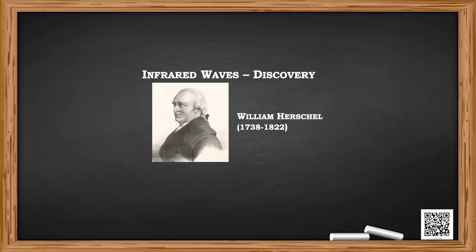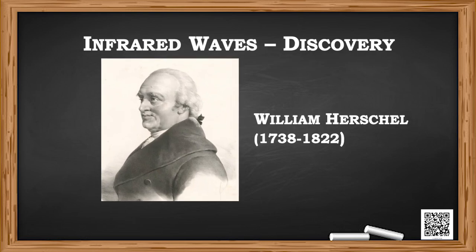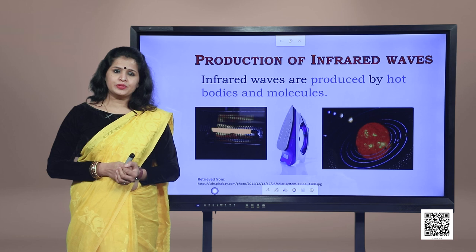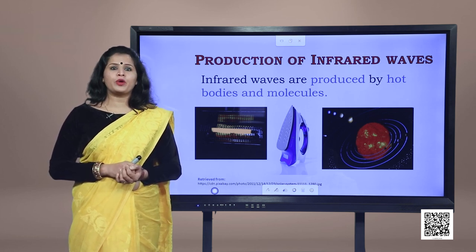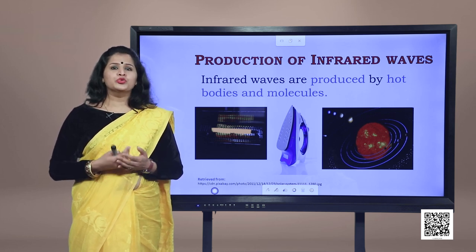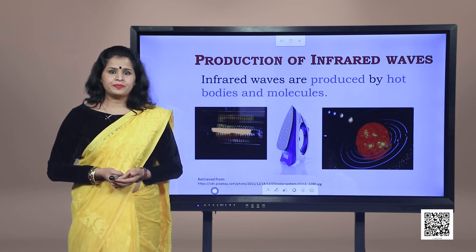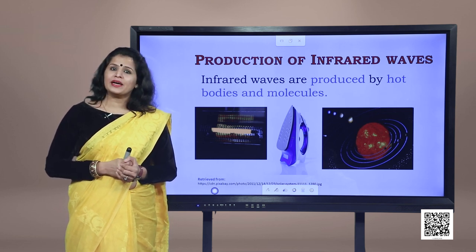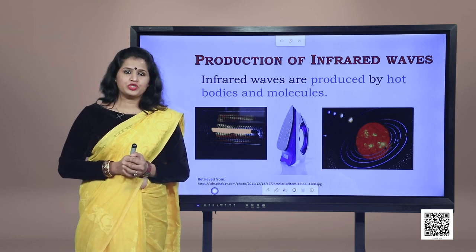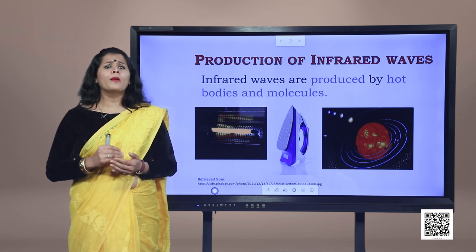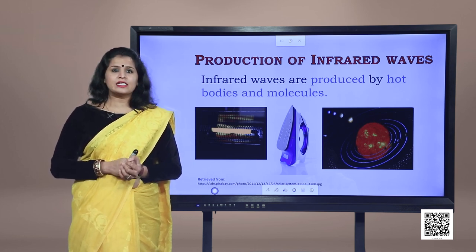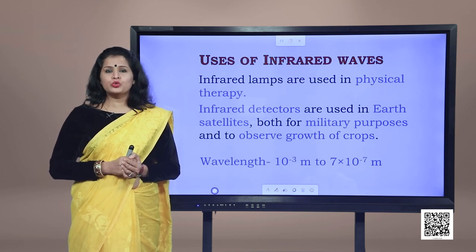Let's now study infrared rays. William Herschel is given the credit for the discovery of infrared waves. Infrared waves are produced by hot bodies and molecules. The Sun is the dominant source of infrared waves on Earth; other examples are room heaters, geysers, and irons. These waves cannot be seen by human eyes as their wavelength does not lie in the visible range. Our Sun produces more yellow light than any other color because its surface temperature is 5500 degrees Celsius.